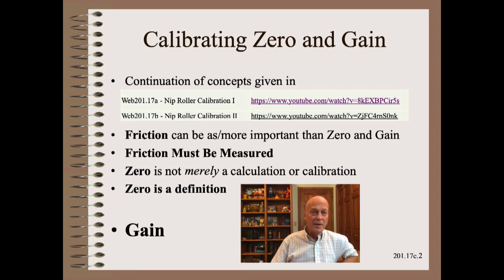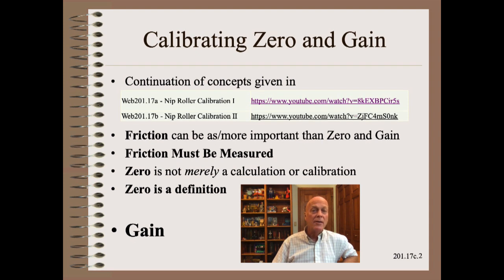In the last two clips, which I urge you to study first, we introduced two new concepts. The first is that friction must be measured before anything else. As a second step, we must define a zero that is particular to a particular element. Finally, in this clip we describe how to calculate and calibrate gain.